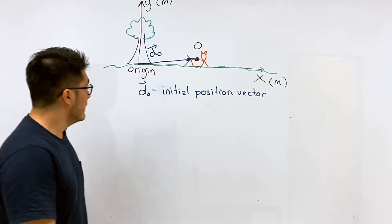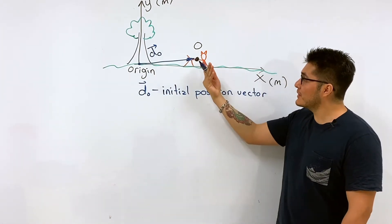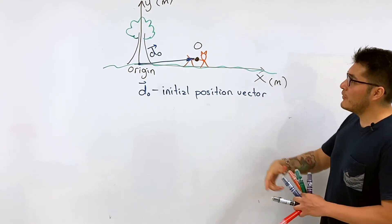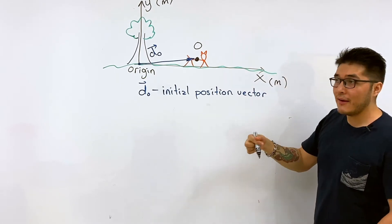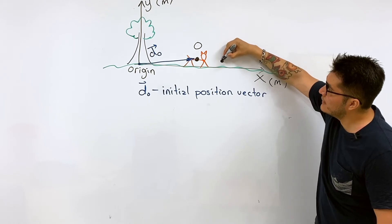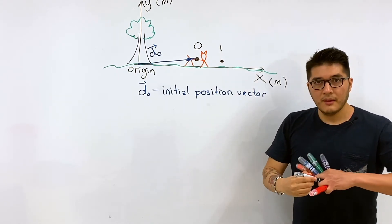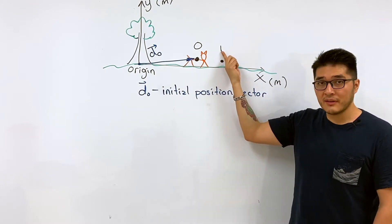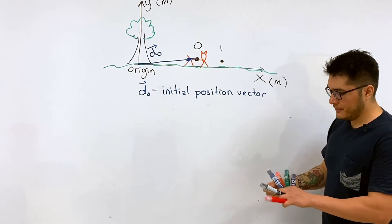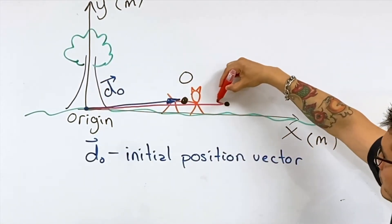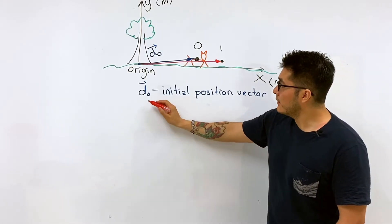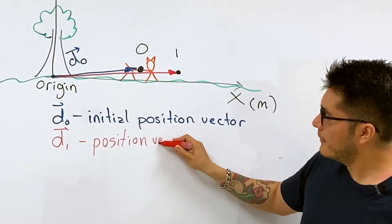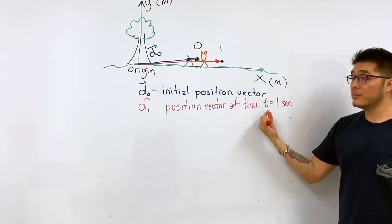Things are always in motion — cheetahs don't usually like to stay in one position; they're usually hungry. For now, the cheetah is strolling along to the right, and after one second the frame is indicated by time one. To draw the position vector again, we go from the origin to where the object is at that specific time, in the direction towards the object. For this next position vector we use the notation d₁, the position vector at time t equals one second.